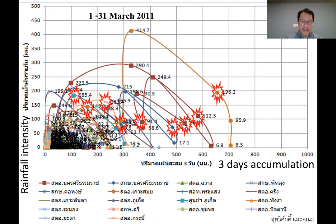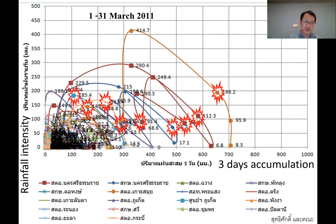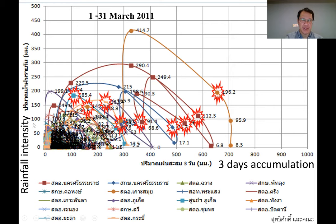For example, in Thailand, one storm of rainfall will continue for about three days, so that's why we use three-day accumulation. We then compare with the rainfall intensity, which is in millimeters per day — the unit of rainfall per day.